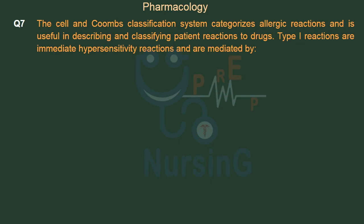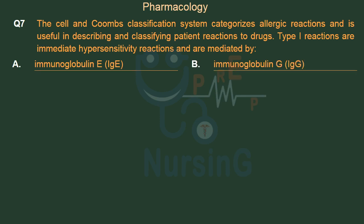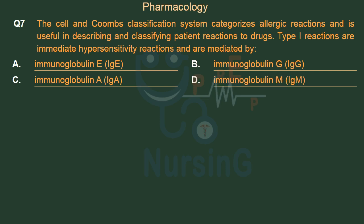The Gell and Coombs classification system categorizes allergic reactions and is useful in describing and classifying patient reactions to drugs. Type I reactions are immediate hypersensitivity reactions and are mediated by: Option A: Immunoglobulin E (IgE). Option B: Immunoglobulin G (IgG). Option C: Immunoglobulin A (IgA). Option D: Immunoglobulin M (IgM).